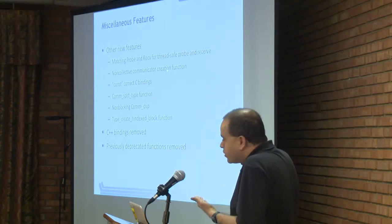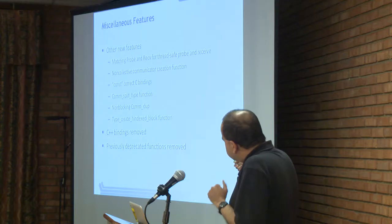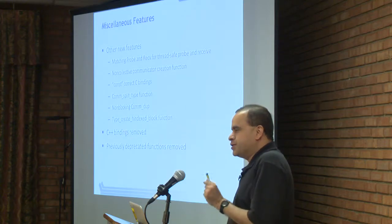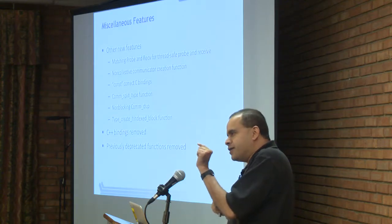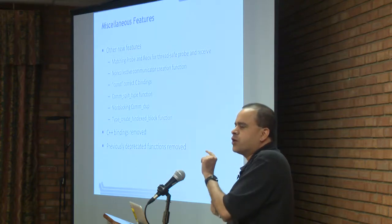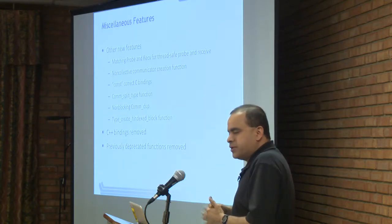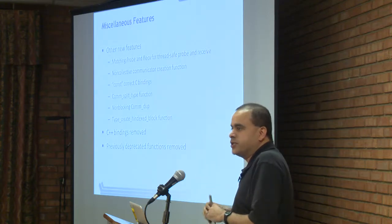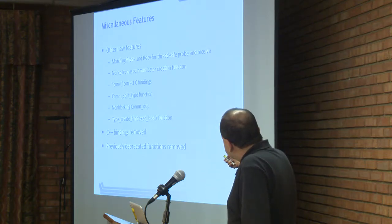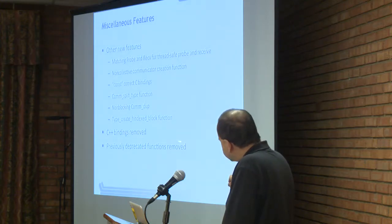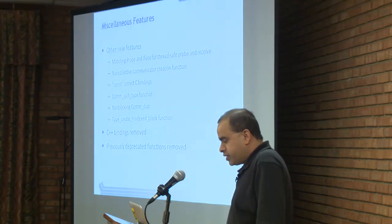There is a way to create new communicators in a non-collective way, which some users wanted. The C bindings have been made const-correct — some parameters were not properly declared as const, and that has now been fixed. There are also a bunch of smaller miscellaneous features. The C++ bindings were removed, but you can use the C bindings from C++, and deprecated functions have been removed.